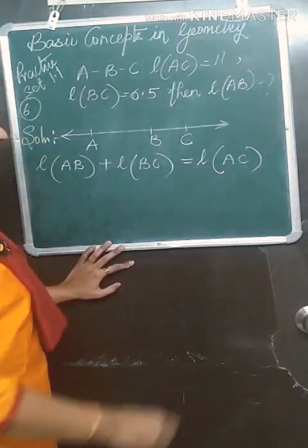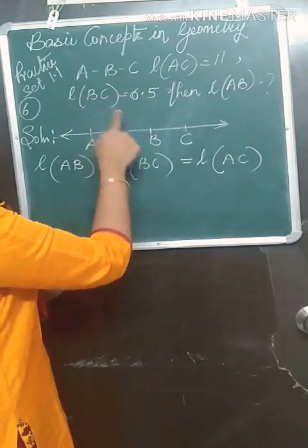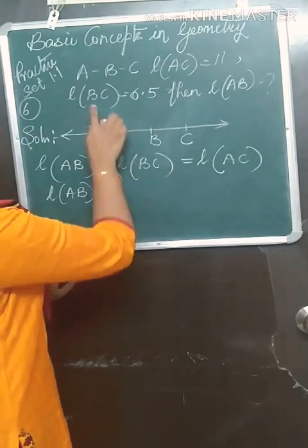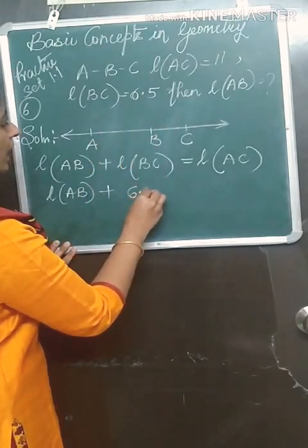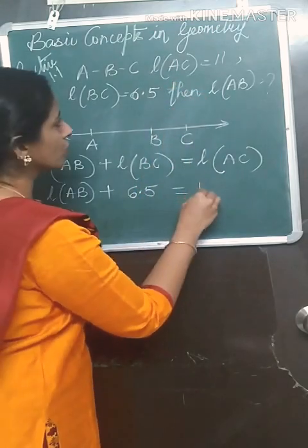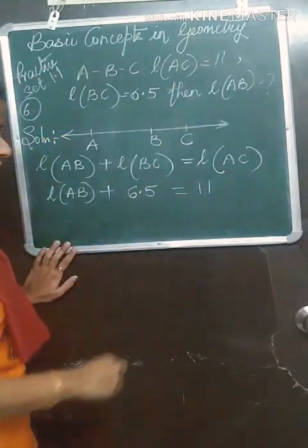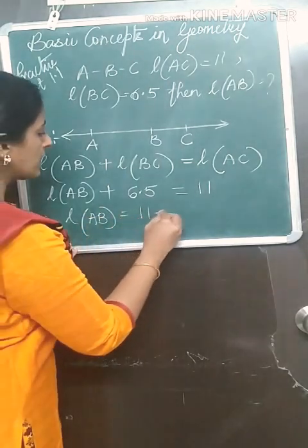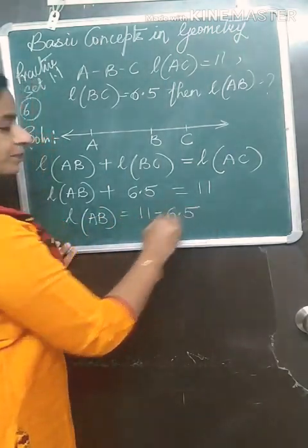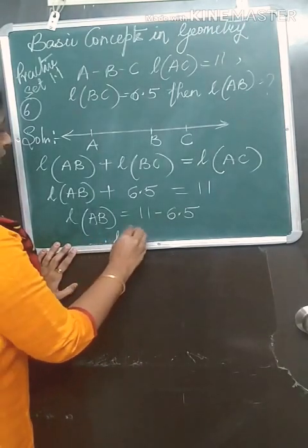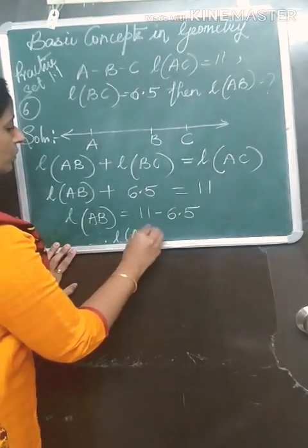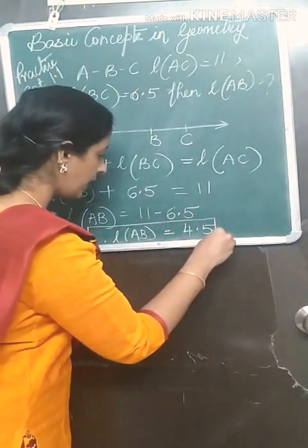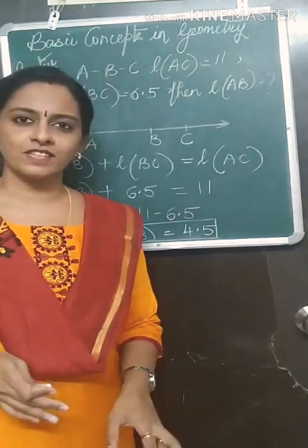BC is given as 6.5. So length of AB is equal to 11 minus 6.5. Therefore, length of AB is equal to 4.5. That's the first sum.